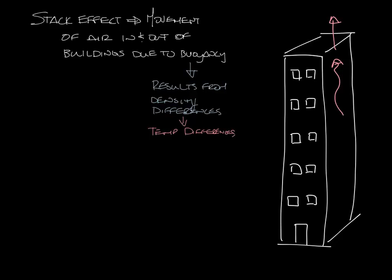Stairwells and elevator shafts contribute to the stack effect as hot air rises up them. The airflow leaving the top of the building creates a negative pressure that will draw air into the building. This air can come through doors, windows, and other cracks in the building. This is called infiltration, and the air leaving the building is called exfiltration.